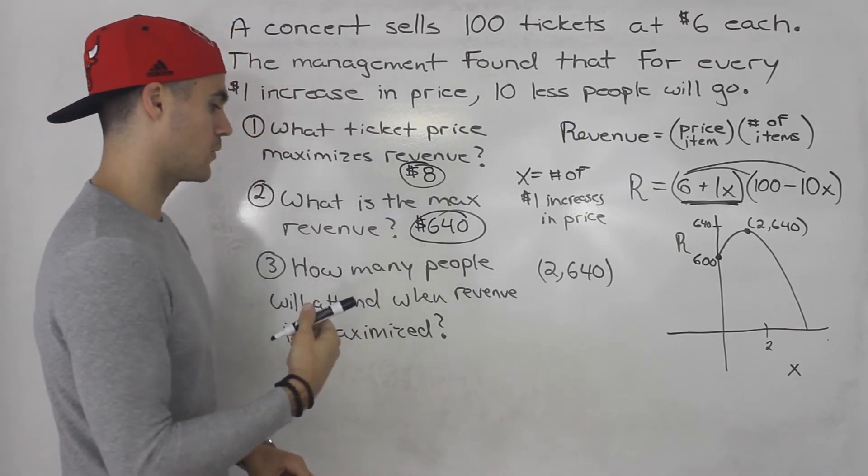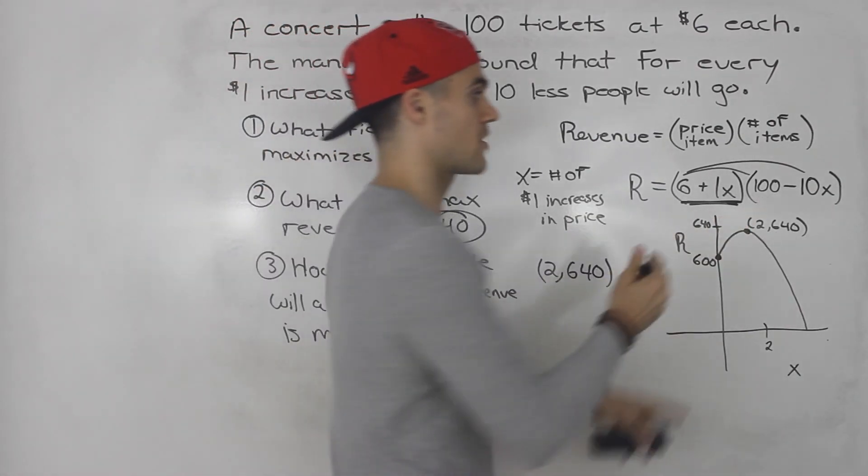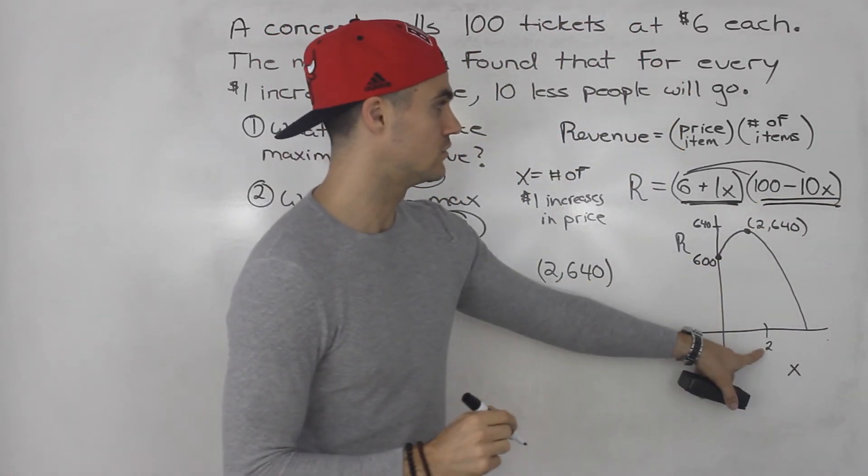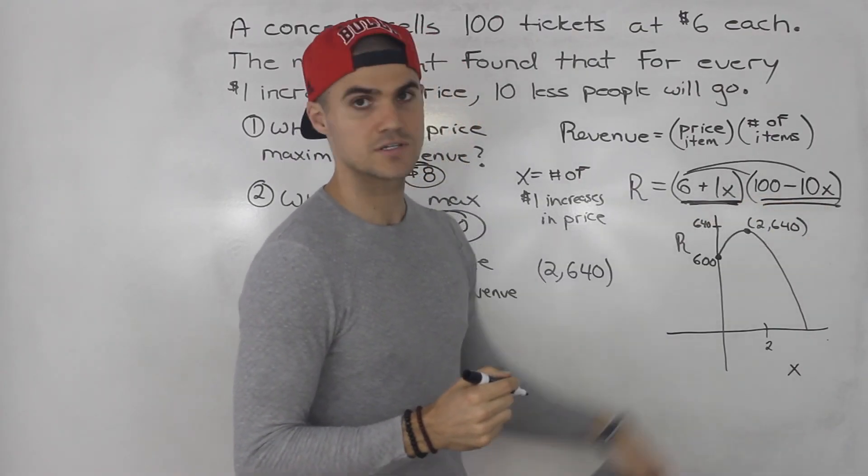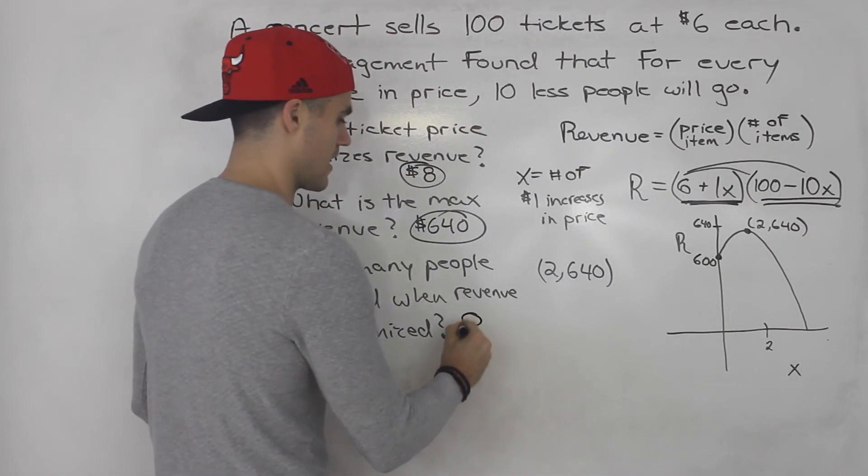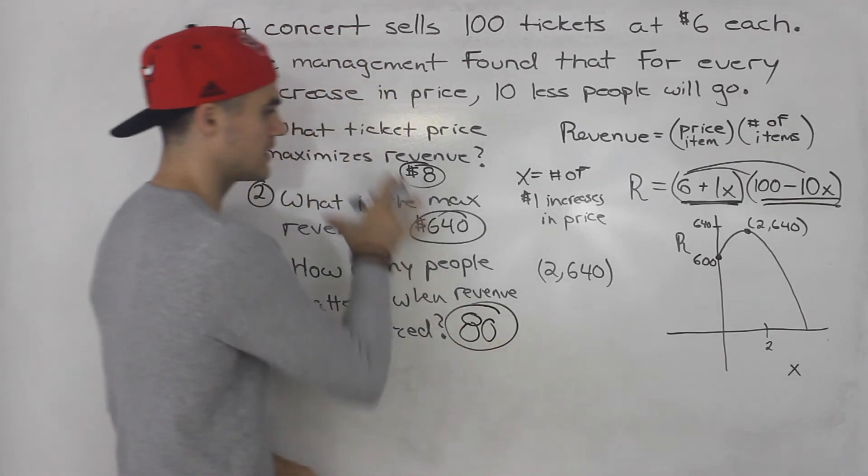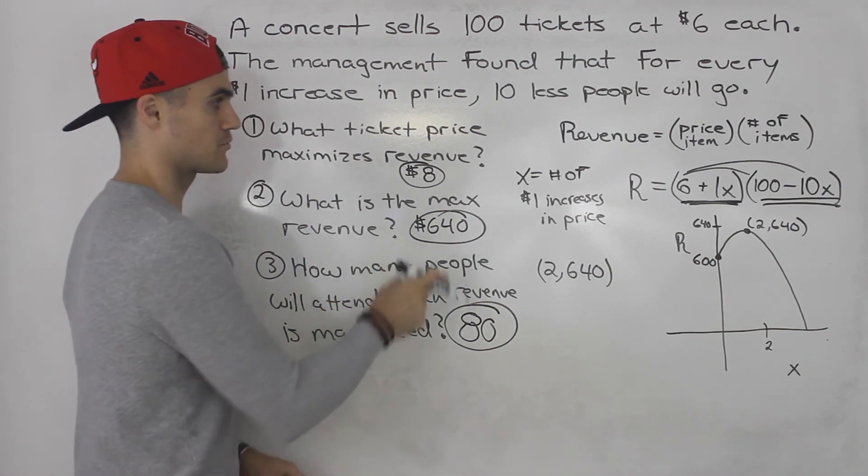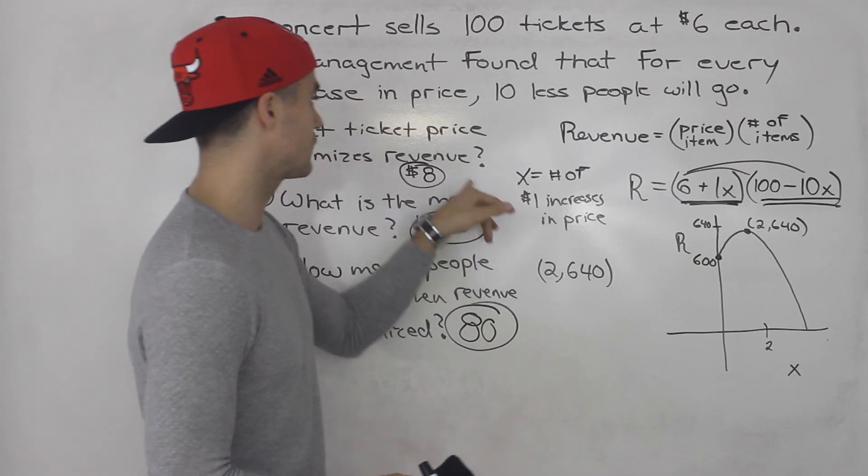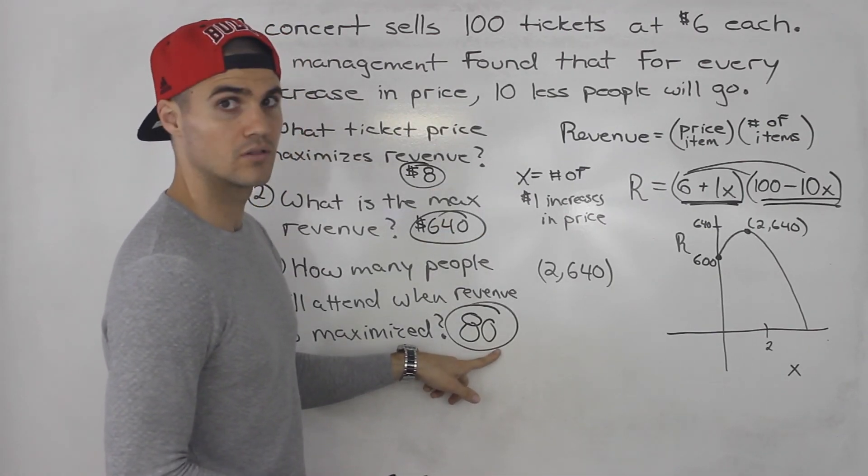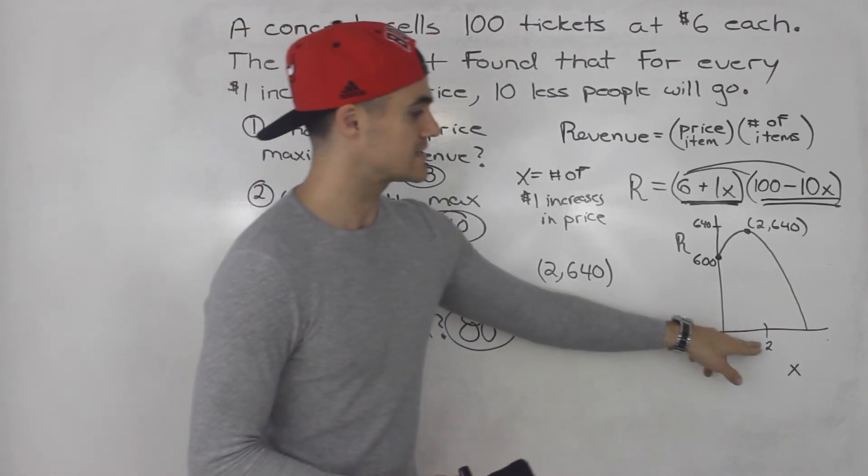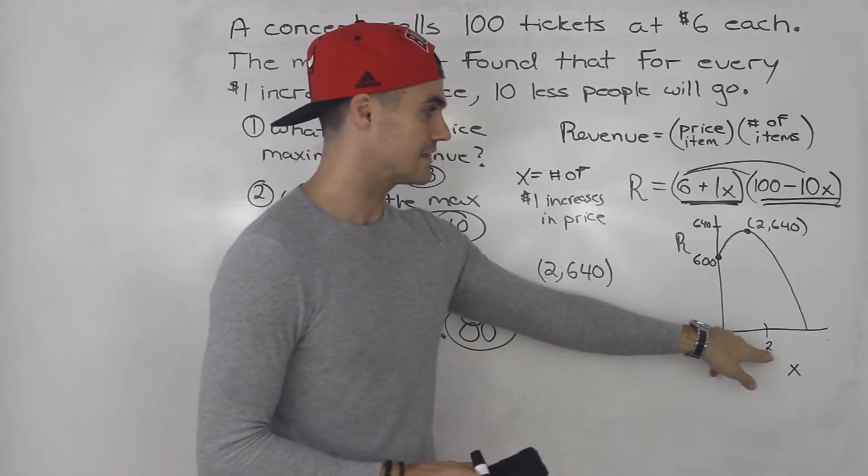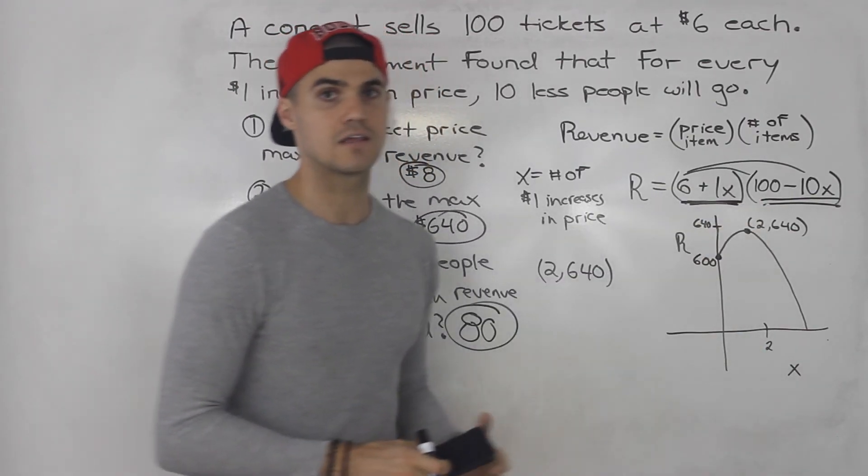How many people will attend when revenue is maximized? That's this bracket here. This bracket represents the number of people. So we would plug in 2. 100 minus 10 times 2 gives us 80. So 80 people will attend. You got to be careful with what they are asking you. If they are asking you for the maximum revenue, that's just the y value of the vertex. But if they are asking for the price or the number of people when revenue is maximized, it's not this x value of 2. Remember this x value represents the number of increases in prices. You got to take this x value of 2 and plug it into either bracket.